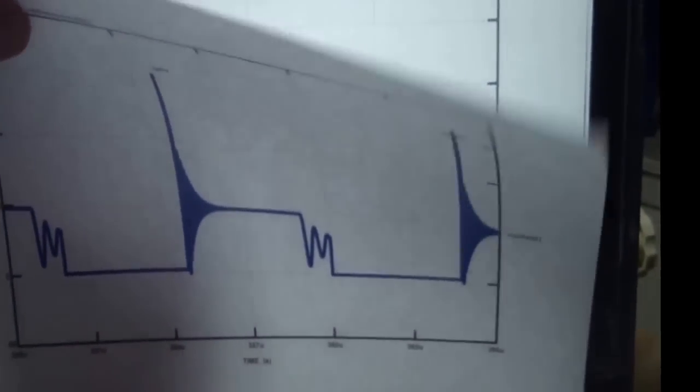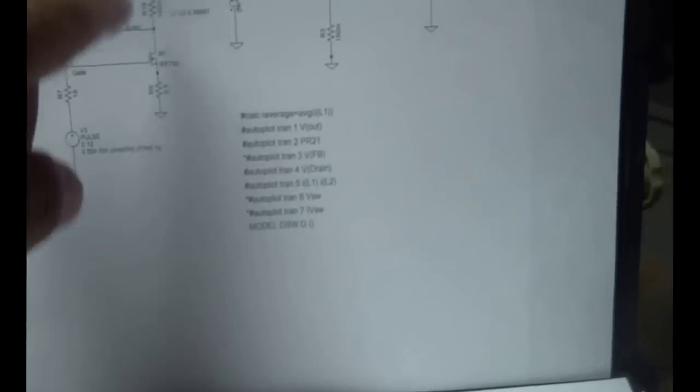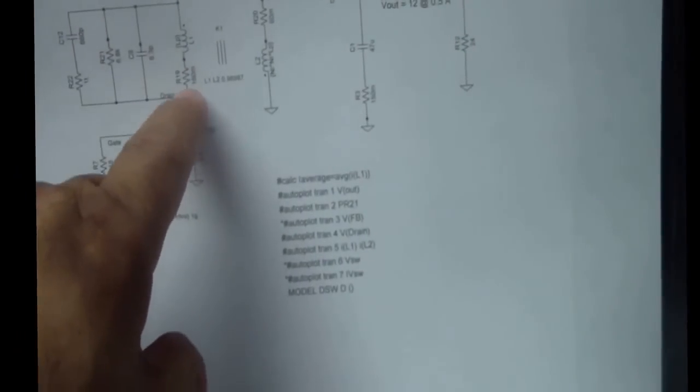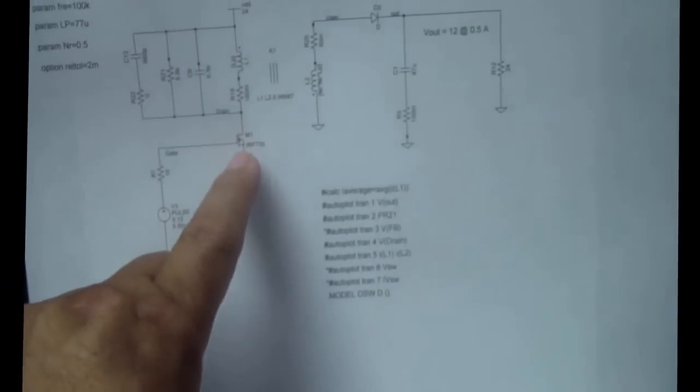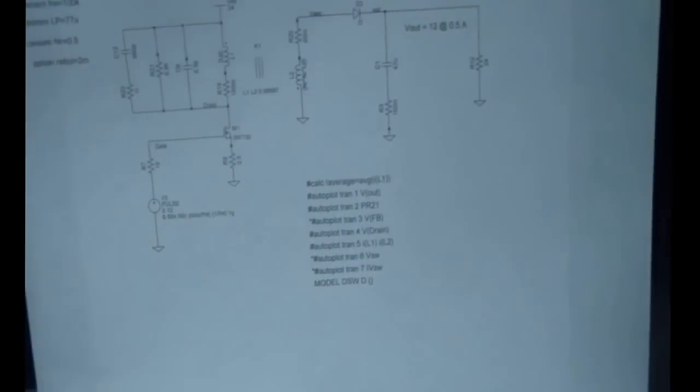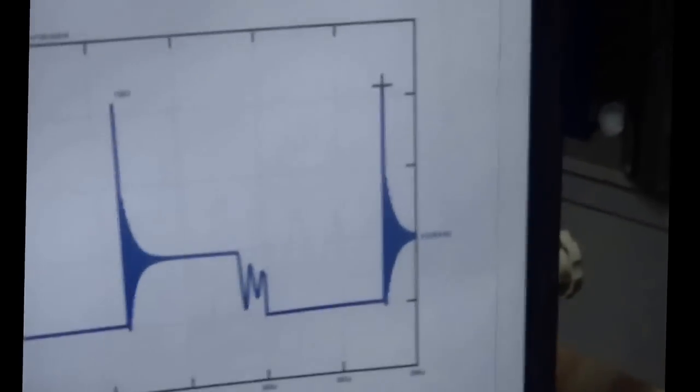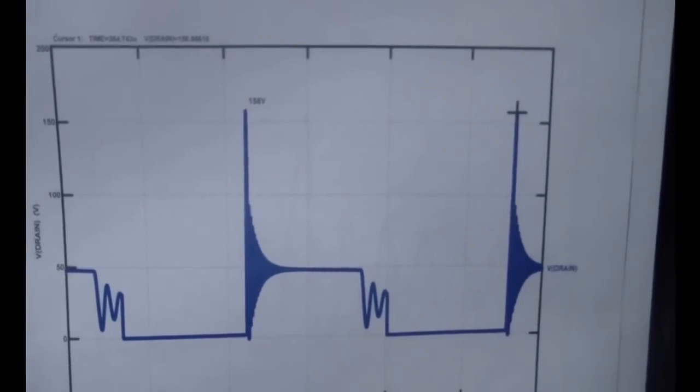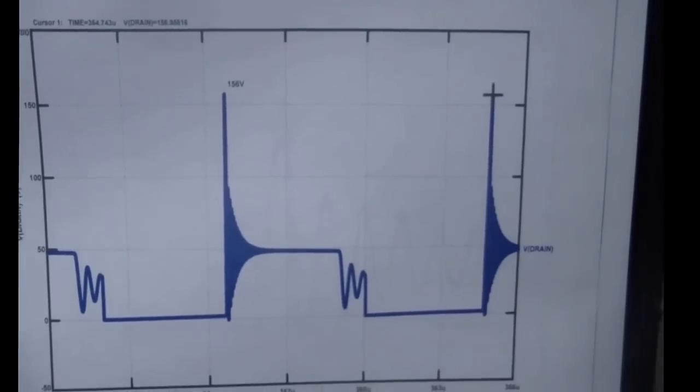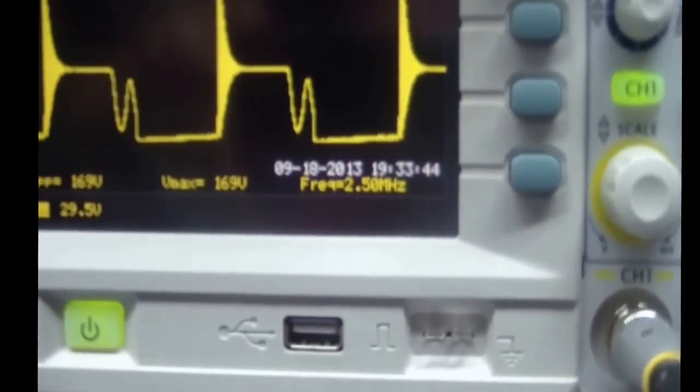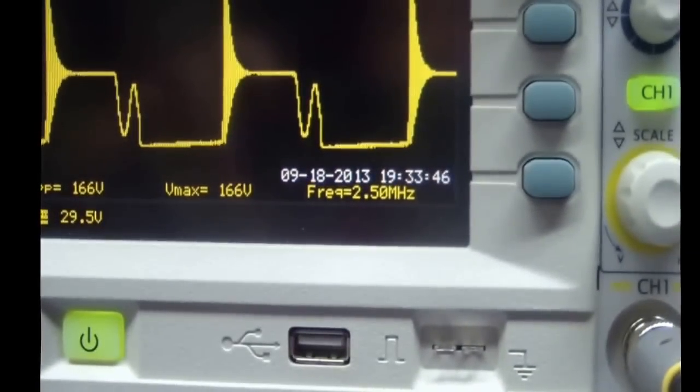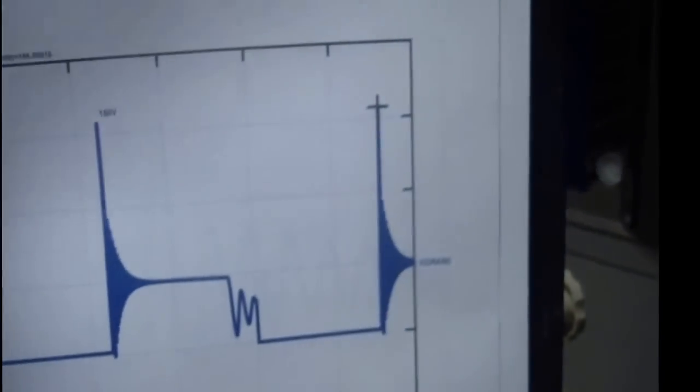The reason it rings is because there's a leakage inductance that is in series, and it rings with the capacitance of the output capacitance from the drain. So in this case, the peak voltage is 156. And if I look over here, the maximum is approximately 166, which is pretty close.